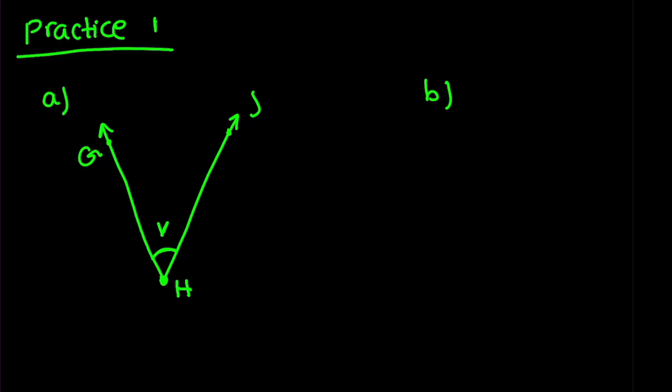And we call it H. And the angle that I created by the two lines GH and HJ is called V. So now I'm going to name the angles. We say angle V, or what do we say? What can we say? GHJ or angle JHG. So these are the two names that we can give instead of saying angle V.